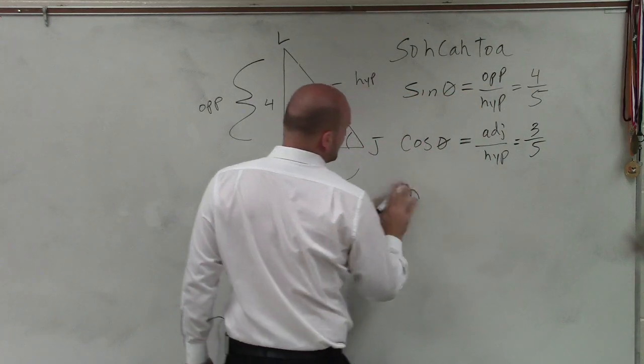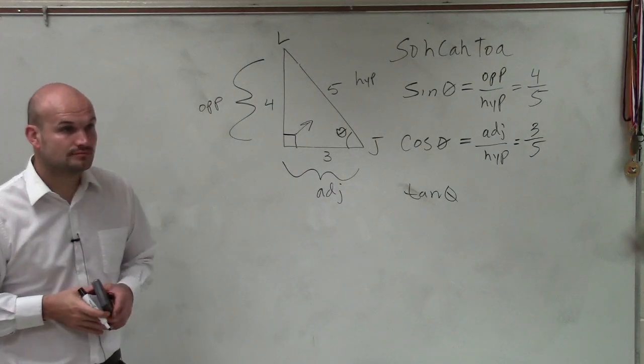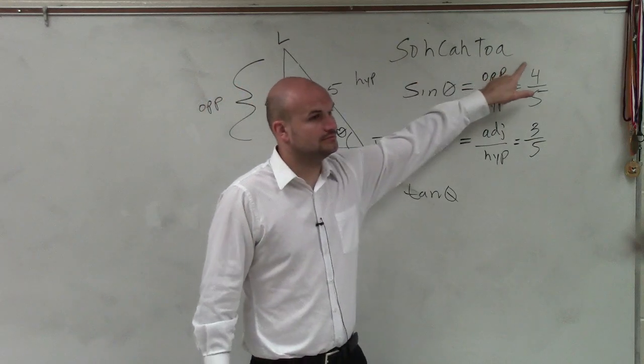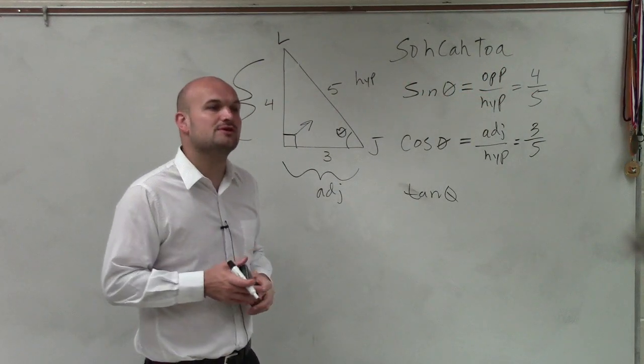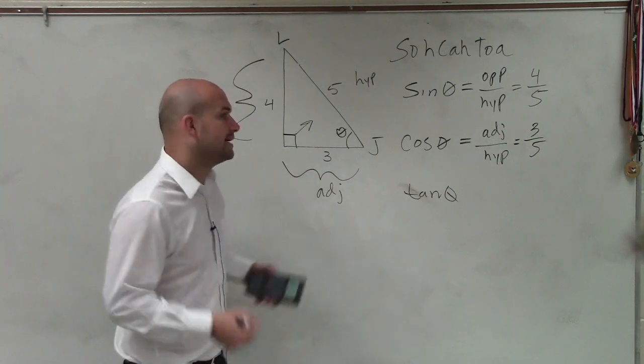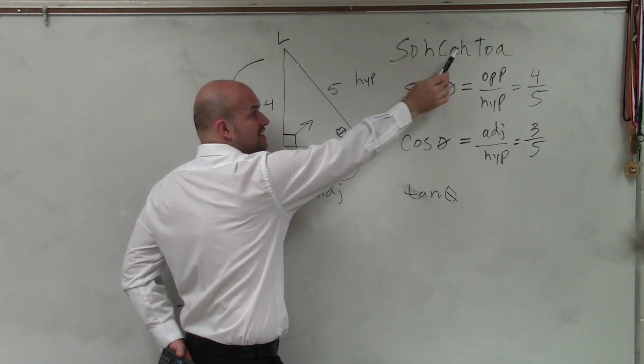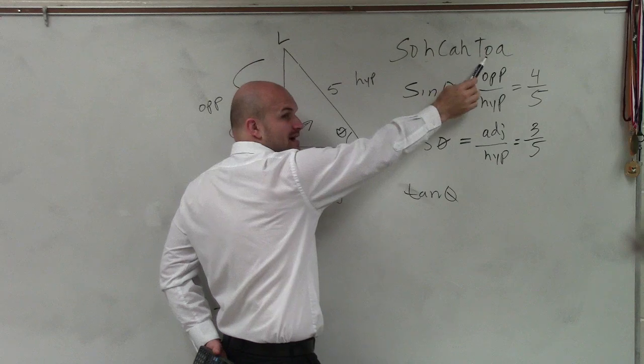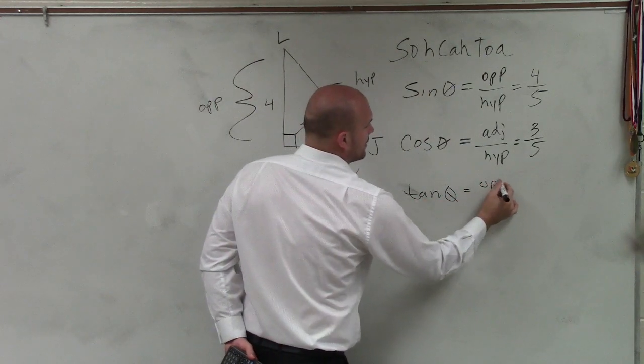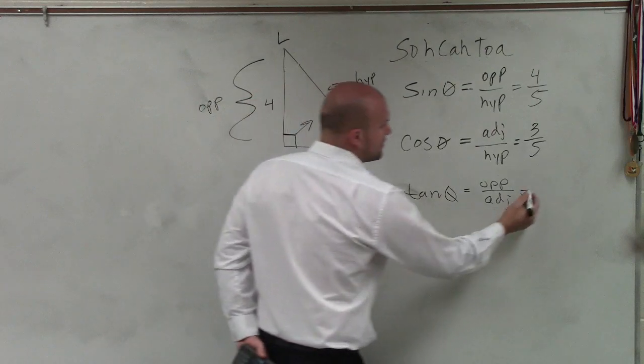And then we have the tangent function. So tangent of theta. Is there anything we could use to remember which one would be - SOHCAHTOA. SOHCAHTOA is what we use to remember these relationships, these ratios. All of the ratios. So SOHCAHTOA: Sine, opposite over hypotenuse. Cosine, adjacent over hypotenuse. Tangent, opposite over adjacent. Then tangent of theta is going to be opposite over adjacent. So my opposite side is 4 and my adjacent side is 3.